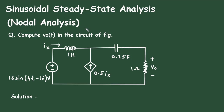If you want to see more topics, check the playlist section of this channel. Also, if you want to buy my notes, check the link in the description below. In this video we will see an example on sinusoidal steady state analysis using nodal analysis. The question is: compute Vo(t) in the circuit of the figure. We have to find the value of Vo. First of all, we will take this circuit.